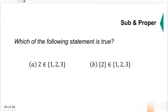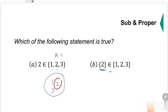Which of the following statement is true? Is 2 an element of the set containing 1, 2, and 3? This is a set, I can use a diagram to draw it. This is the set. Let's say this is set A containing 1, 2, and 3. Can I find 2 inside this set? Yes, so this is true.